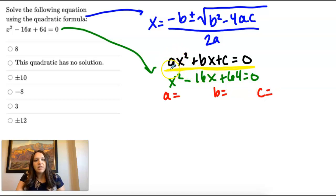So a is the number next to x squared. So for this one, there's the invisible one, a is 1. b is the number next to x. And we take the sign with it, so it's negative 16.